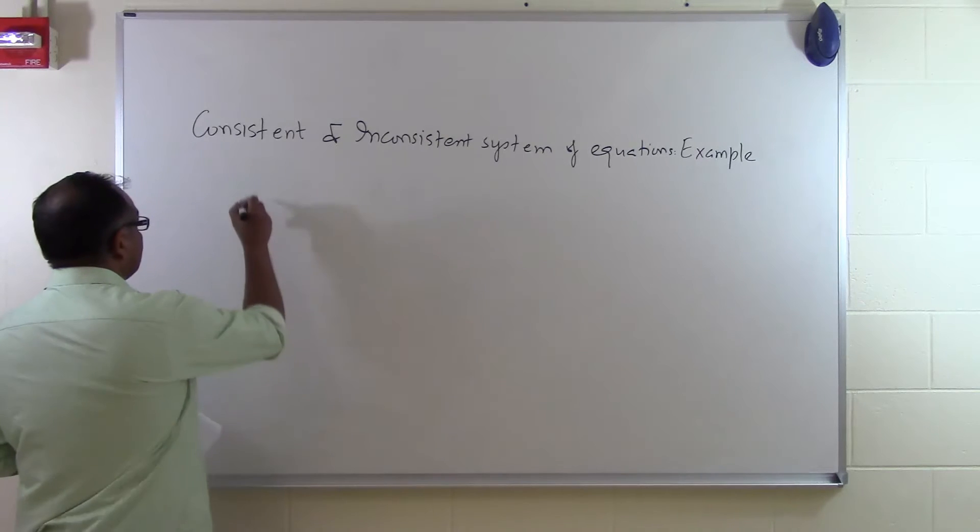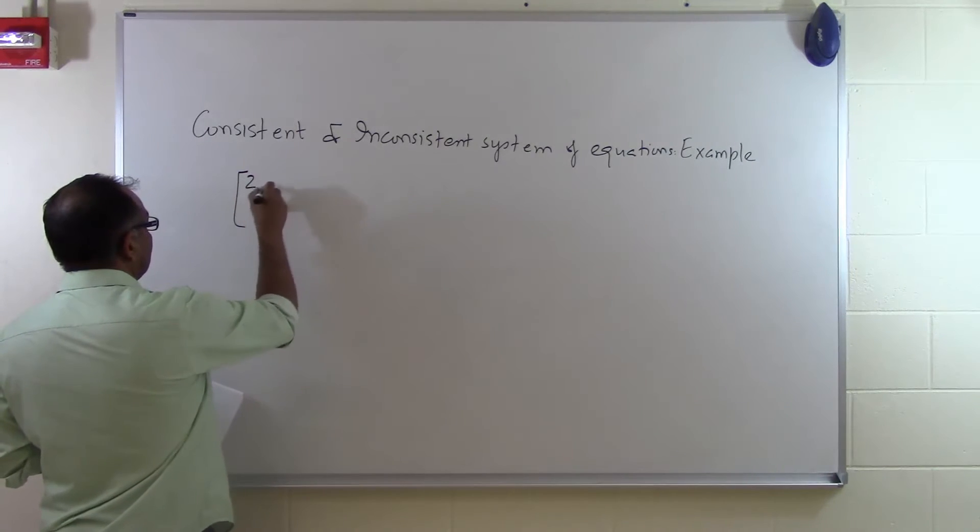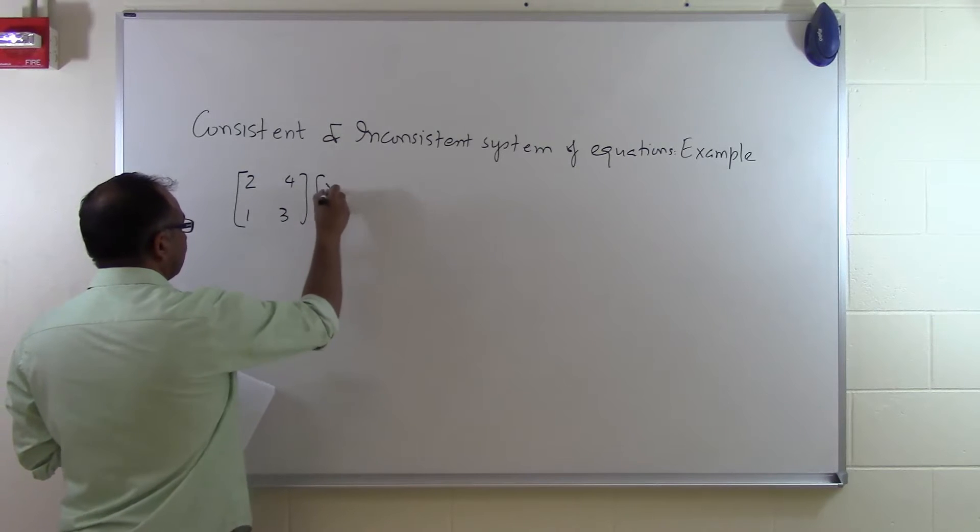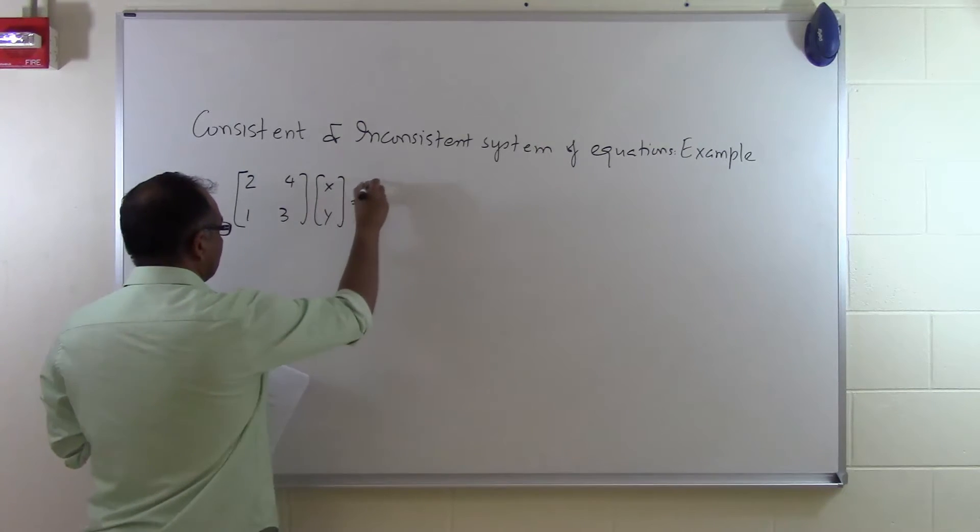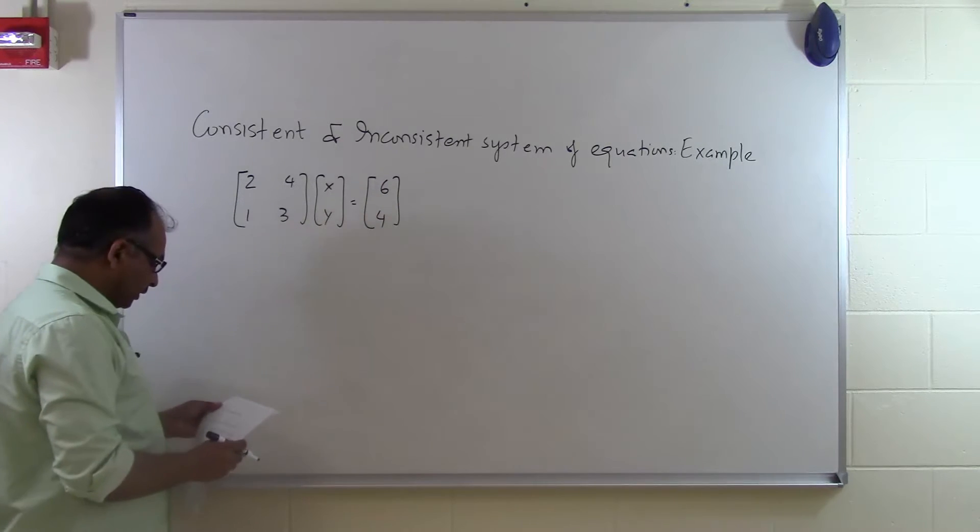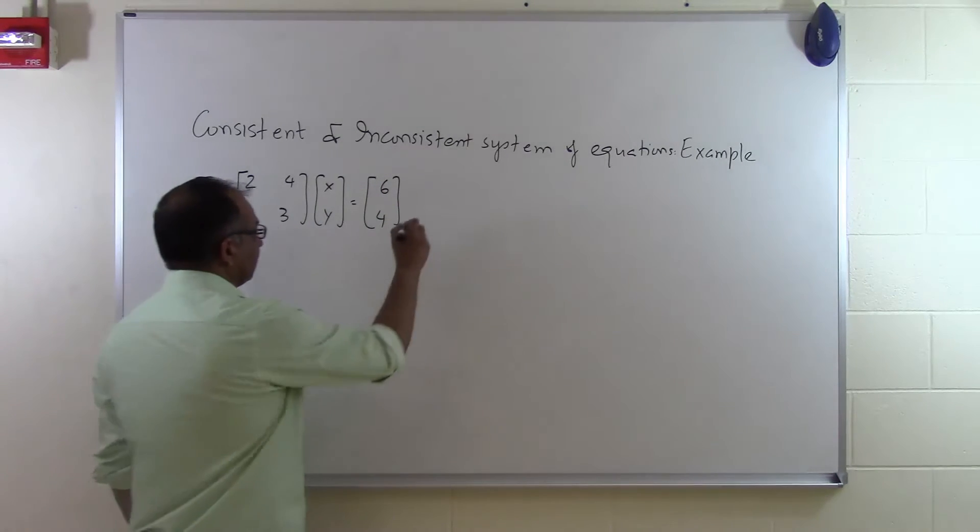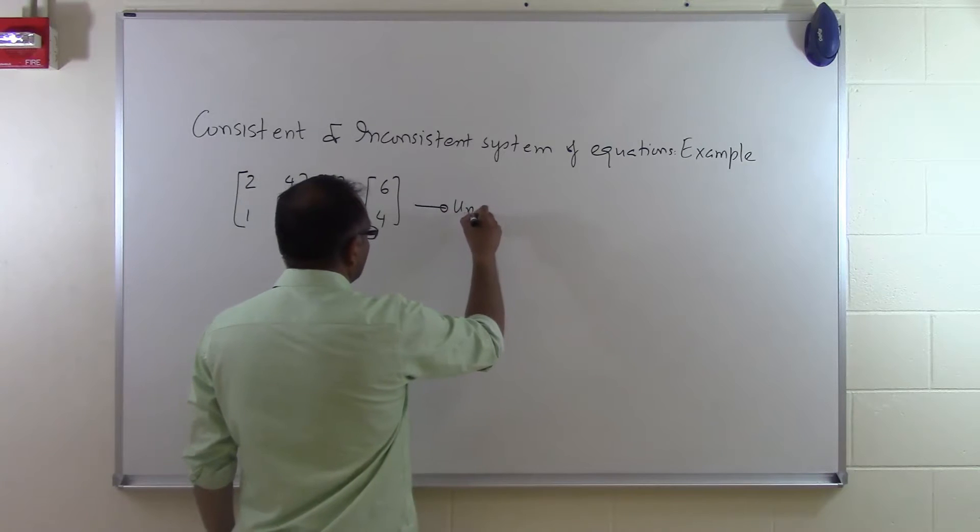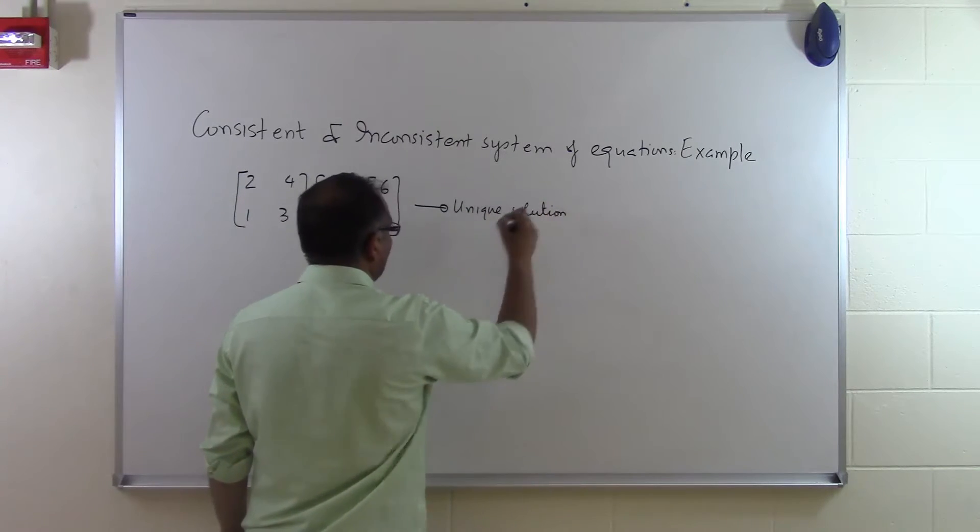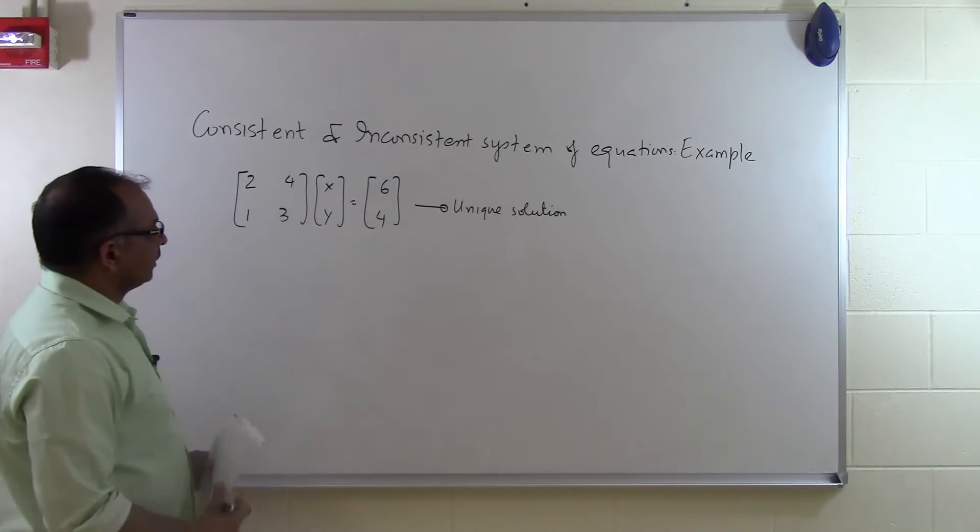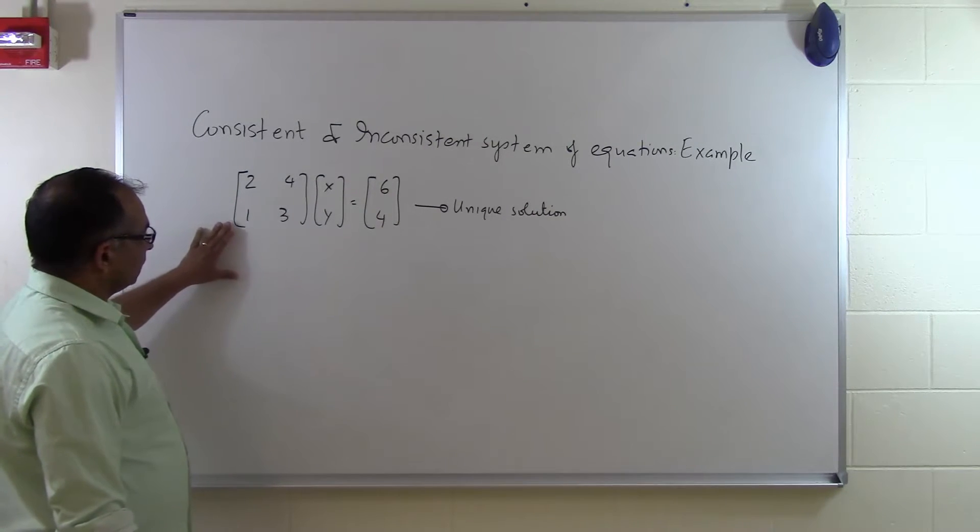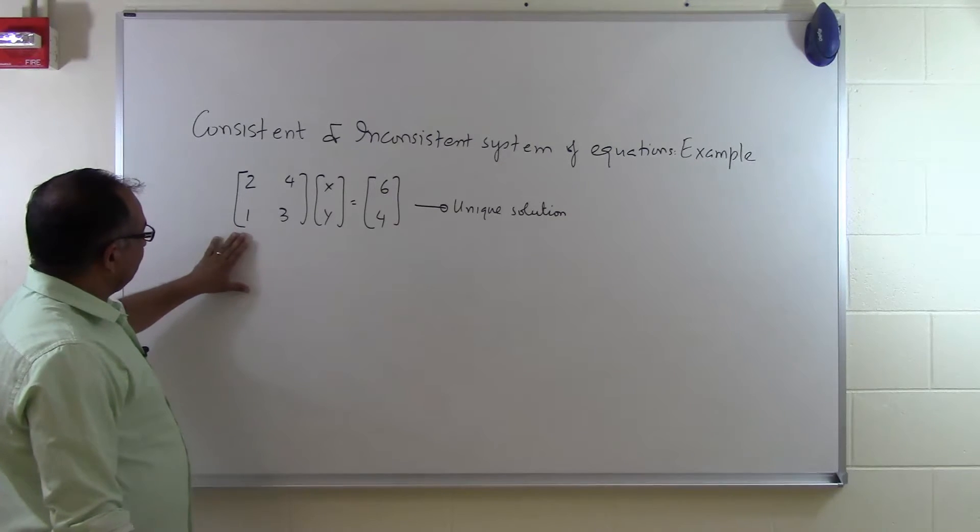So let's look at this example right here. The matrix [2, 4; 1, 3] times [x; y] equals [6; 4]. This set of equations is considered to have a unique solution. How do I know that it's a unique solution? That's something we will talk about in future segments. So this one has a unique solution.